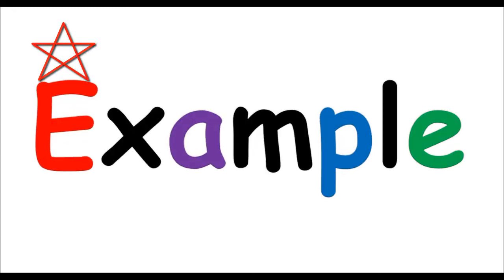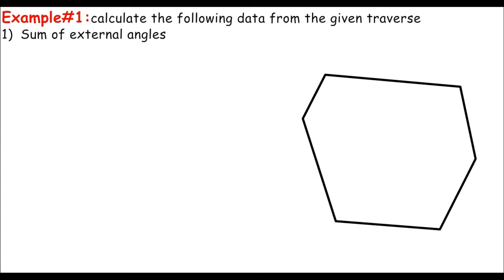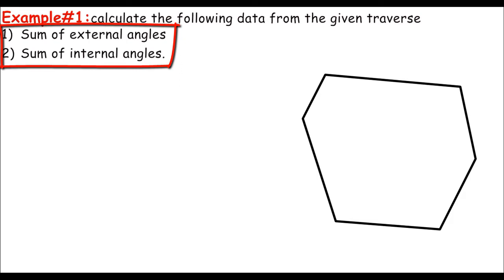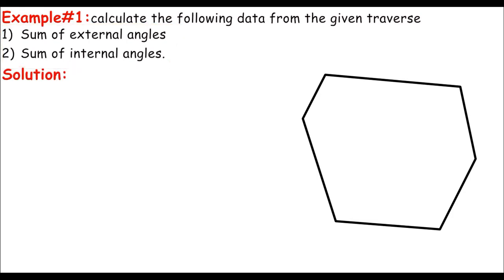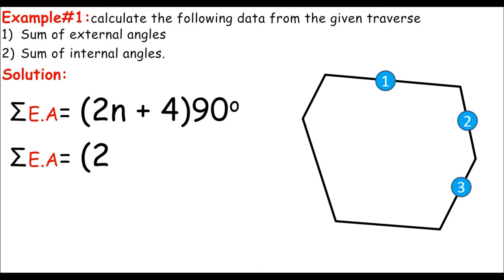Let me do an example to understand the problem better. In Example 1, we are asked to calculate the sum of external angles and sum of internal angles from the given traverse. The traverse is already drawn. Coming directly to the solution — I'll calculate the sum of external angles using (2n + 4) × 90°. You can count the sides: 1, 2, 3, 4, 5, 6 — so there are 6 sides.